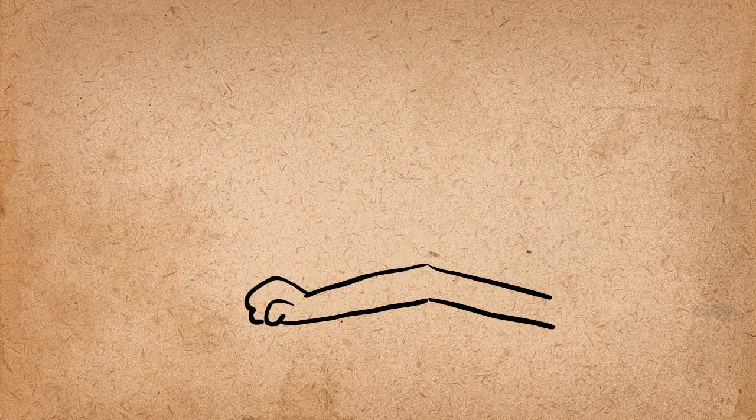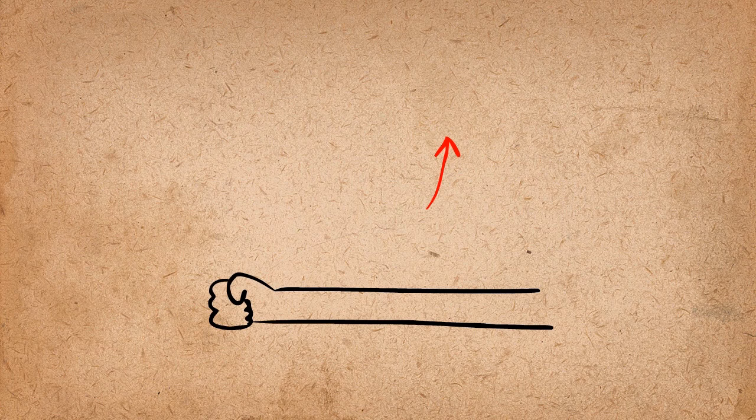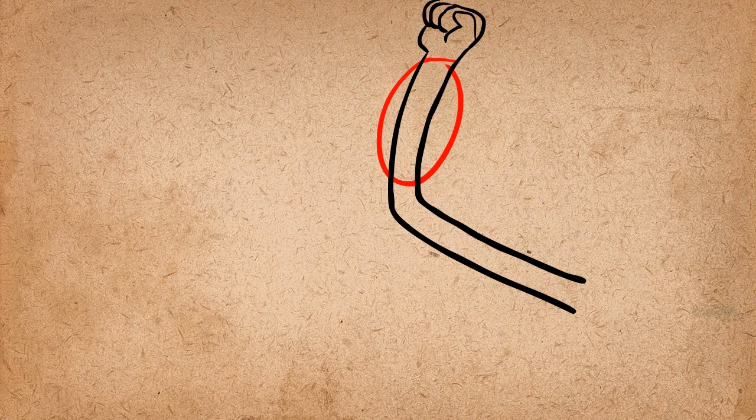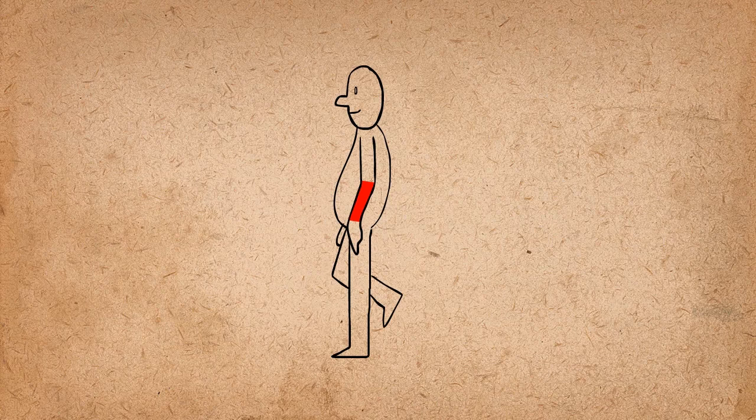Arms are a good place to insert follow through and overlapping action. Have the elbows lead the arms actions. The elbow comes first, followed by the forearm, and then the hand. This is true even when walking. The forearms drag slightly behind the elbows, and the hands drag slightly behind the forearms.